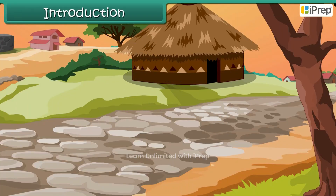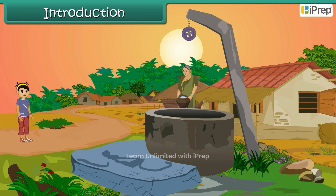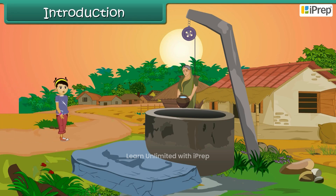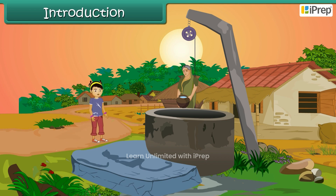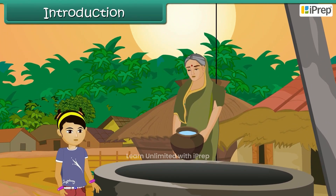Ammu was new to the village. She saw her granny drawing water from the well and was curious to know more about wells. So she inquired her grandmother, and this is what her grandmother explains.